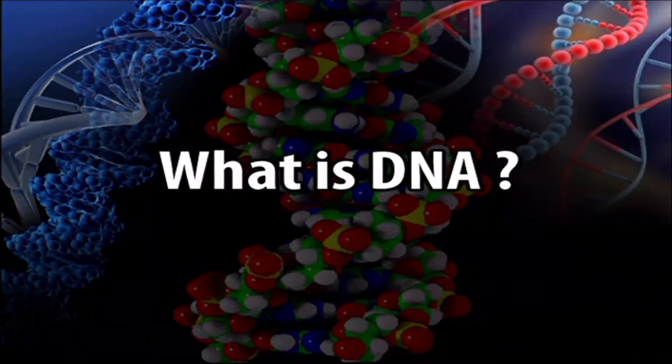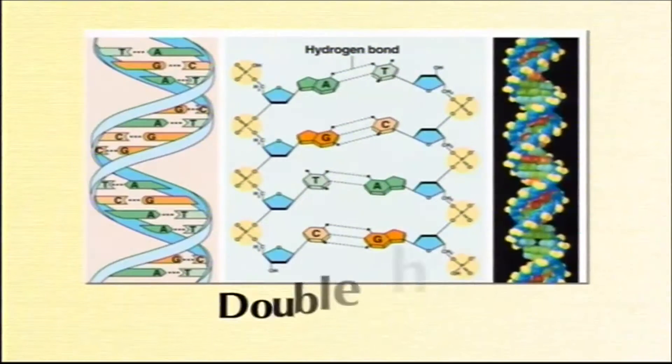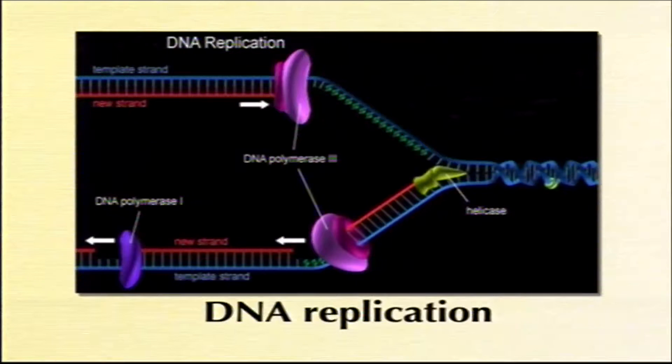Deoxyribose nucleic acid, or DNA, is indeed a magic molecule — it is the single most important molecule in living cells, containing all the information that a cell and the organism needs to live and propagate itself. Natural selection has favored the evolution of double-stranded DNA with its remarkable tight helical structure and ease of unwinding, with bases protected but also available for replication.